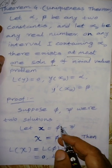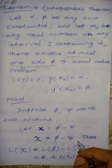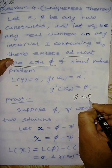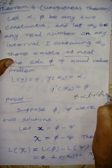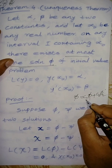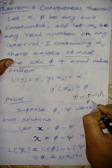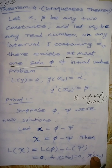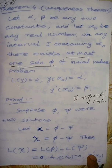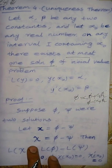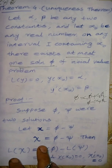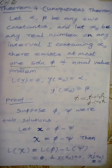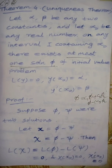Then L of chi can be written by linearity as L of pi minus L of psi, which equals zero. And chi of x0 equals zero, chi dash of x0 equals zero. This is because pi is one solution and psi is one solution — that is very important.